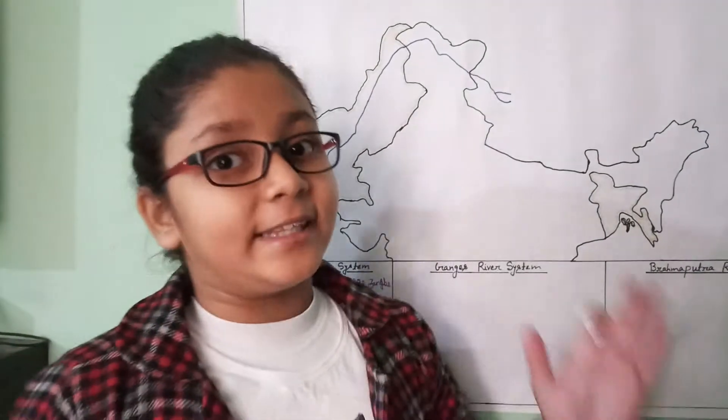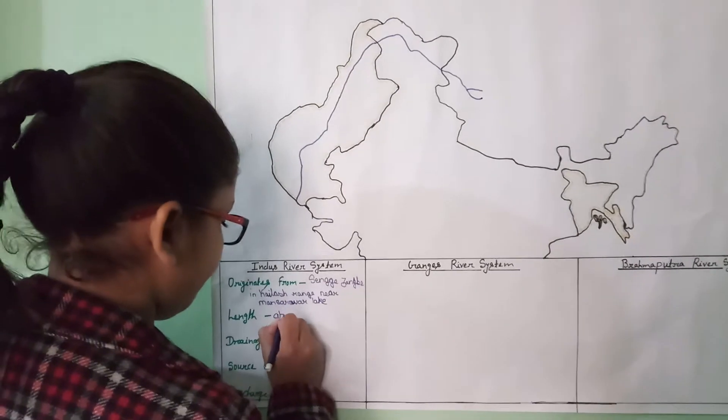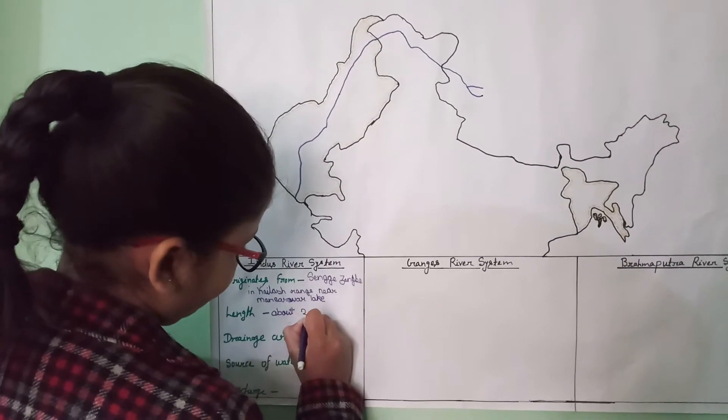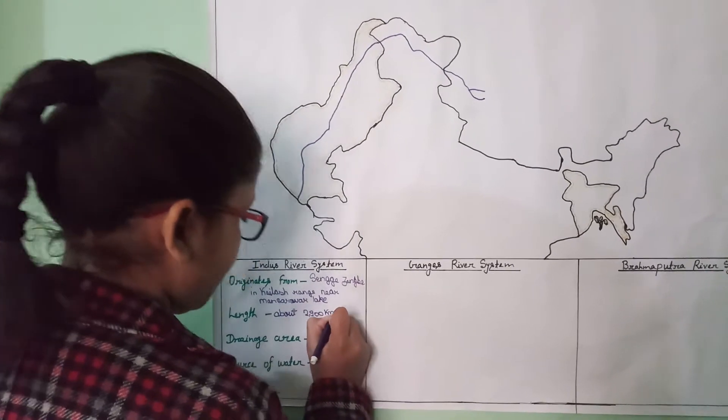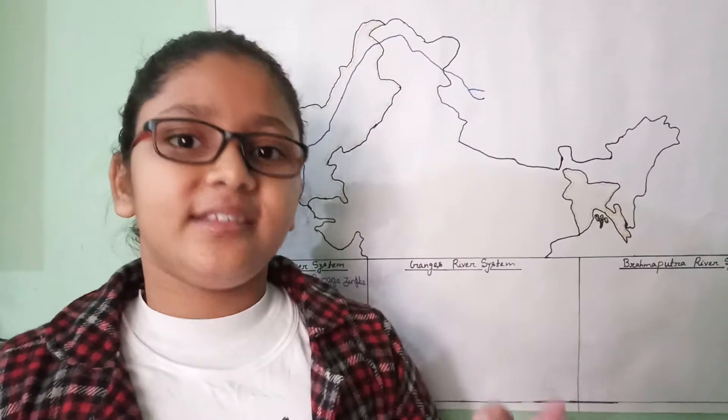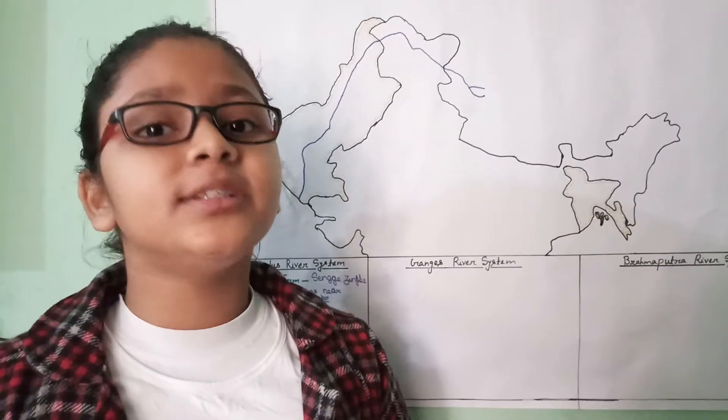So now, the length of this river is about 2,900 kilometers, and its total drainage area is about 11 lakh 65,000 square kilometers.